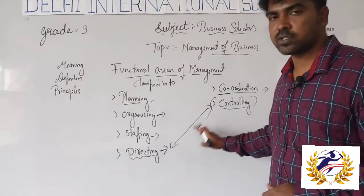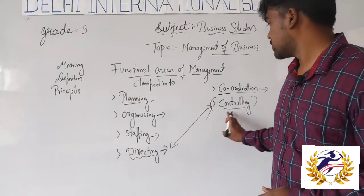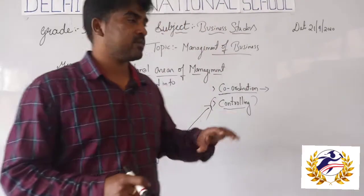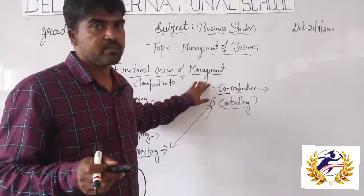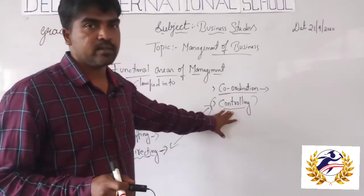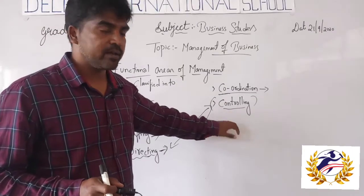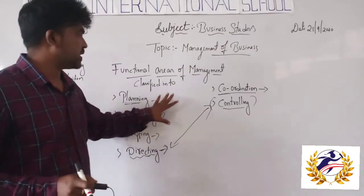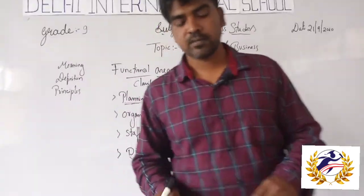Next is controlling. Directing and controlling are somewhat similar. Controlling means managing the entire organization or institution — providing leadership and bonding. These are all important functional areas of management.